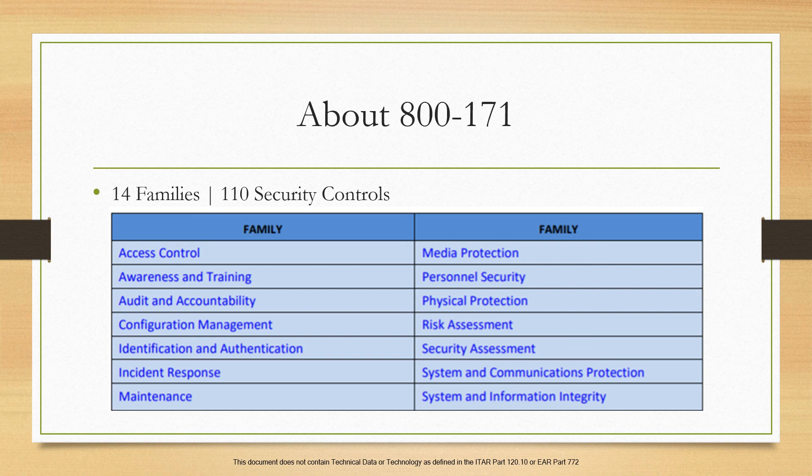Configuration management covers how your networks and safety protocols are built and documented. This can go down to specific servers — how are those built, is there a process documented? That accounts for another nine controls.